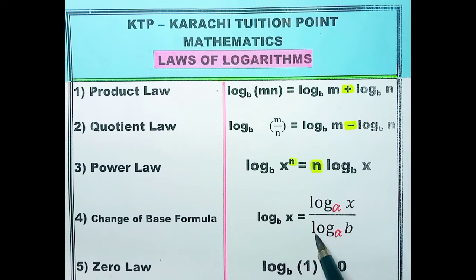This way it becomes numerator and this becomes denominator. And you can see the base is changed. This is law number 4 change of base formula.